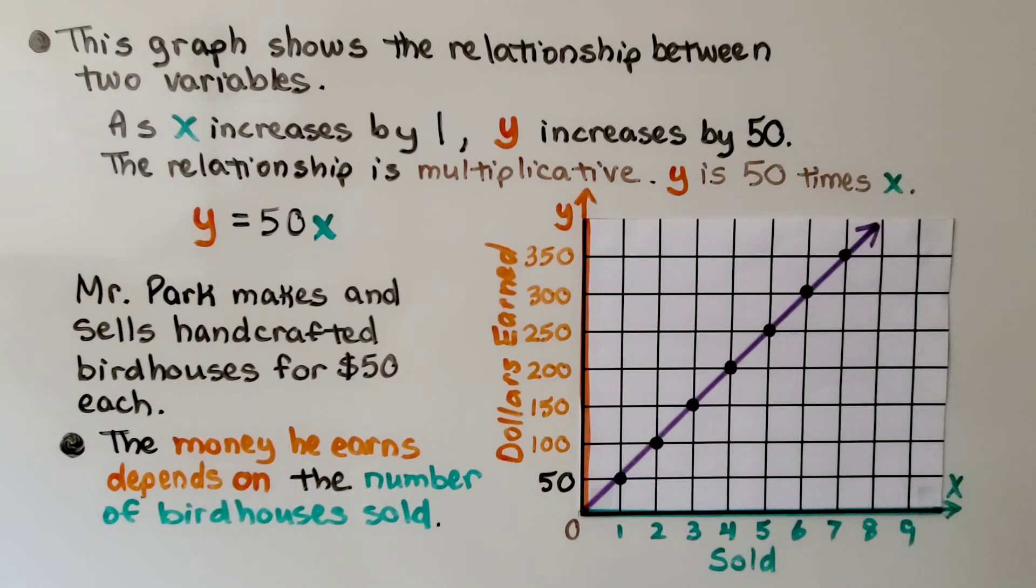This graph shows the relationship between two variables, x and y. As x increases by 1, y increases by 50. The relationship is multiplicative. Y is 50 times x.